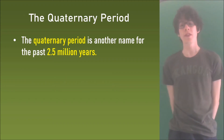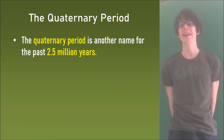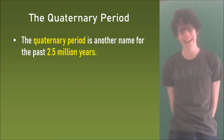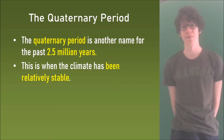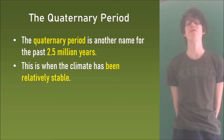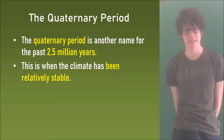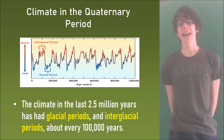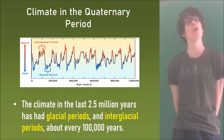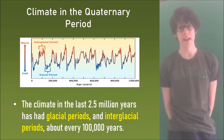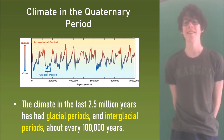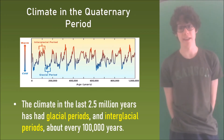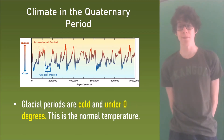The Quaternary Period is another name for the past 2.5 million years. This is when the climate has been relatively stable. The climate in the last 2.5 million years of the Quaternary Period has had glacial periods and interglacial periods about every hundred thousand years.